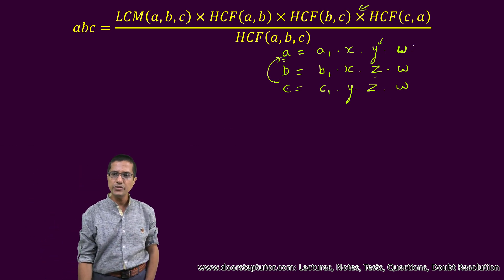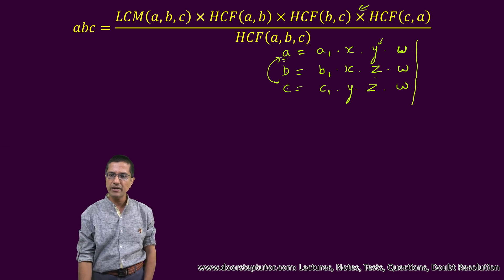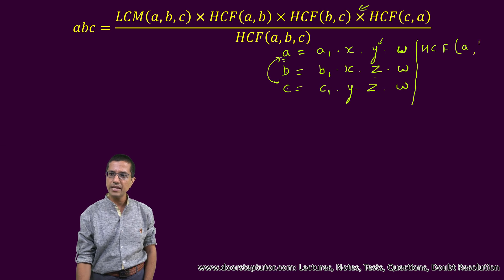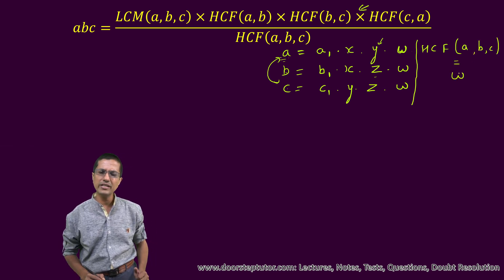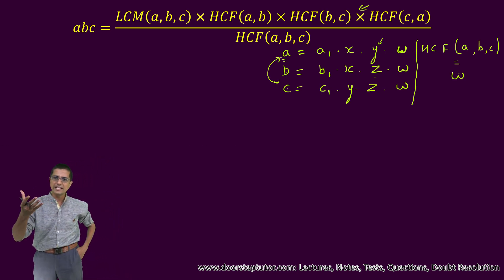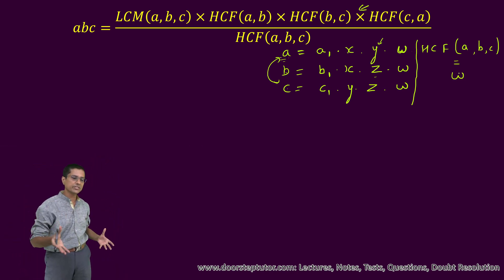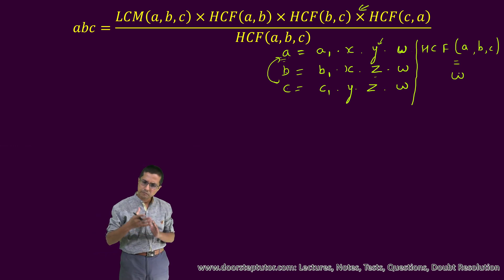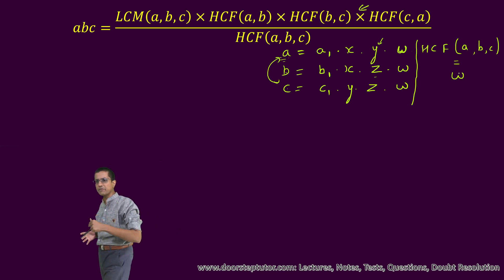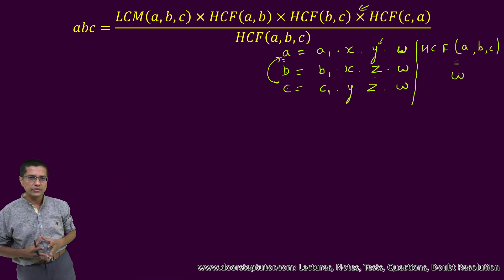Now, as soon as you see this, you can quickly conclude that if we take the HCF of these three numbers A, B and C, this will be equal to W. That comes very naturally because HCF is just the product of factors which is common across all three A, B and C. So HCF of A, B and C is equal to W.